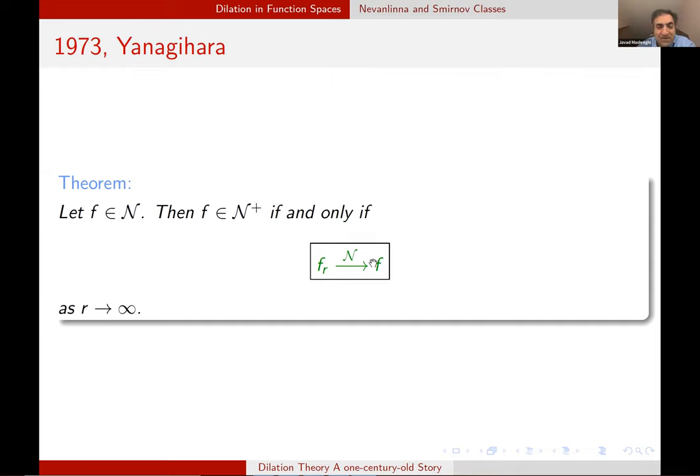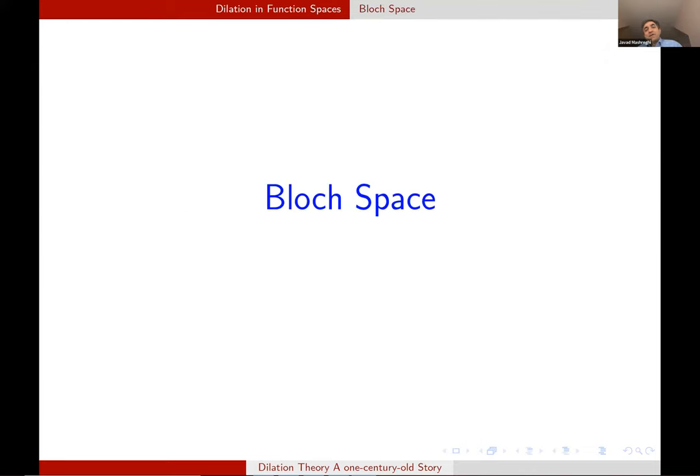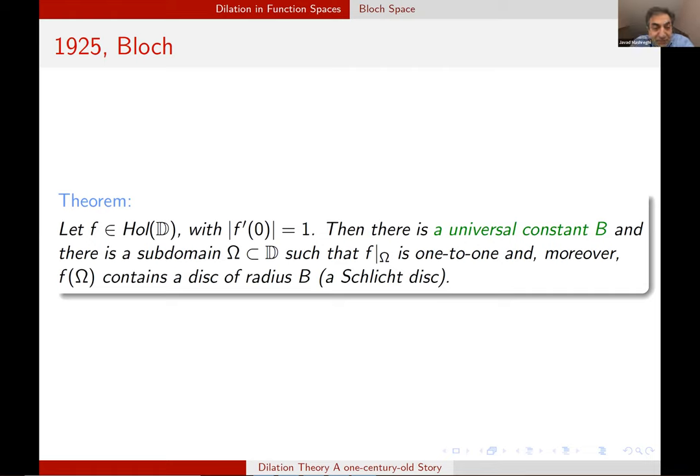Our next space is the Bloch space. A small comment about the history of this. If you have a function and you normalize it, such that mod of F prime at the origin is one. Bloch observed that there is a universal constant, denoted by B, such that there is a subdomain in D. And if we restrict F into this subdomain, it is one to one. And its image contain a disk of radius B. I mean, known as Schlicht disc. In other words, on this domain, F is reversible. But the important thing is the existence of this disk.